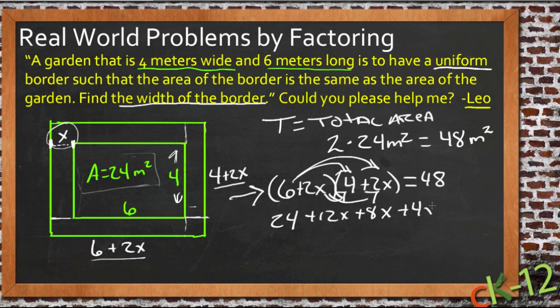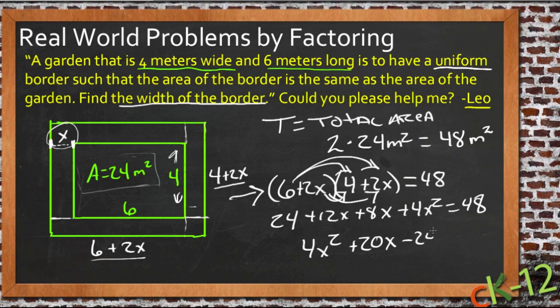Then simplify everything and put everything on the left. We'll get 4x² plus 20x, and then we'll move the 48 over so minus 24 equals 0. Now you just need to factor this and then solve for your two possible values. Your two possible values should come out to be 6 or 1—I'm sorry, negative 6 or 1—and I think you'll find that it's not possible for that border to be a negative value, so you should come up with your answer pretty easily at that point.